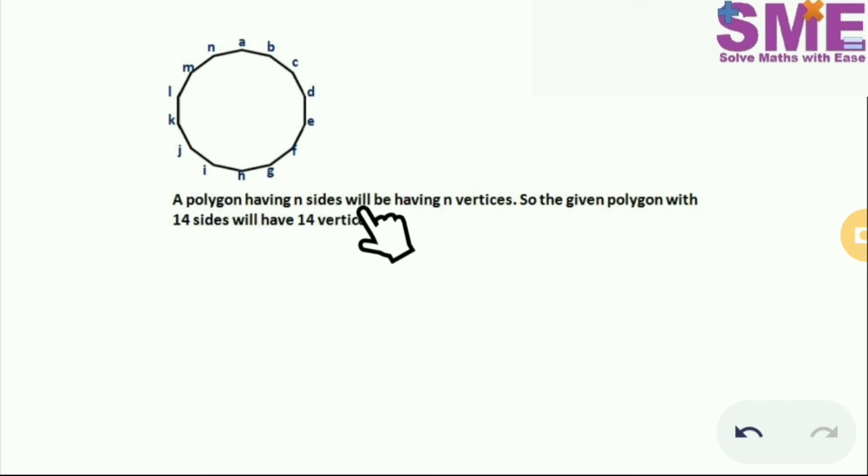A polygon having n sides will be having n vertices. So the given polygon with 14 sides will have 14 vertices. Here you can see I mark these vertices.